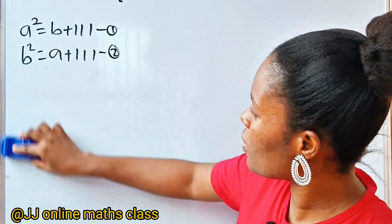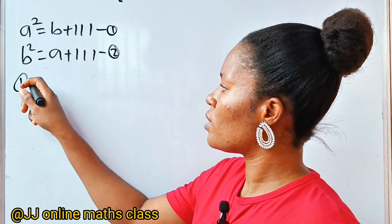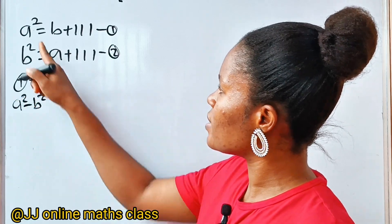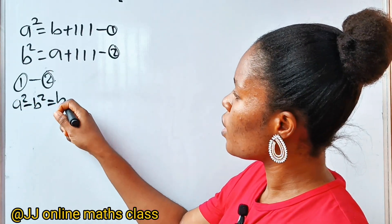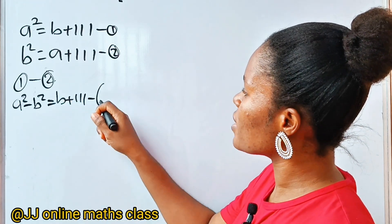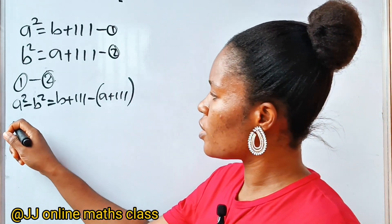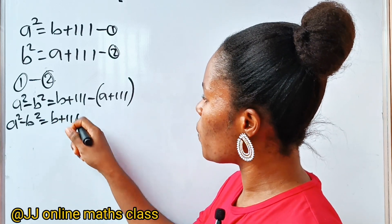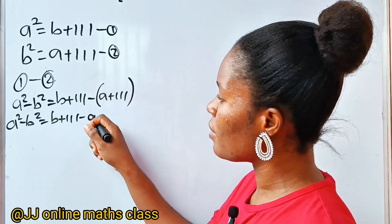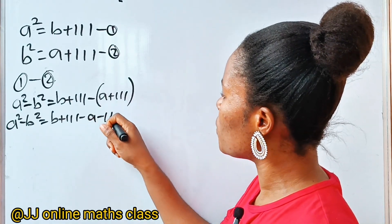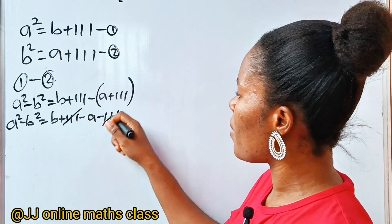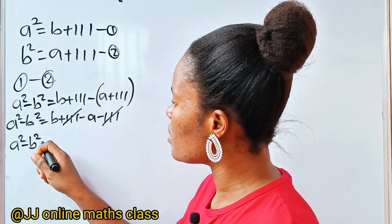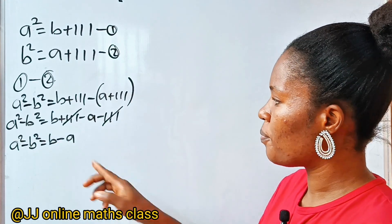Let me wipe this so I have enough to work with. So I said equation 1 minus equation 2. When we do that, we have A squared minus B squared, this minus this, will be equal to B plus 111, minus A plus 111. So A squared minus B squared equals B plus 111, minus A, minus 111. The plus 111 and minus 111 cancel to give 0. So we have A squared minus B squared is equal to B minus A.